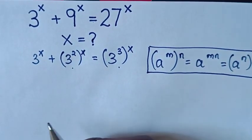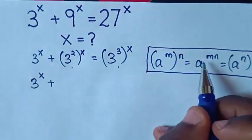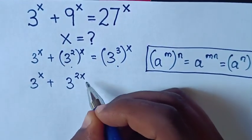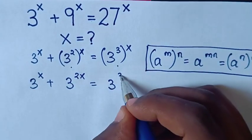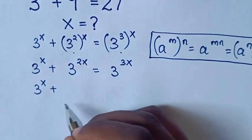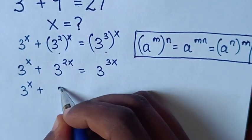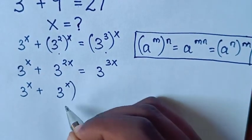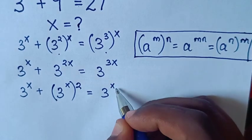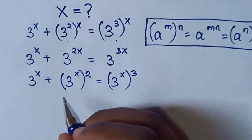Then in our equation, it will be 3 power x plus — here we multiply the powers — so it will be 3 power 2x, is equal to 3 power 3x. Then we exchange the powers, so it becomes 3 power x inside the bracket, power of 2 outside, is equal to 3 power x inside the bracket, power of 3 outside.